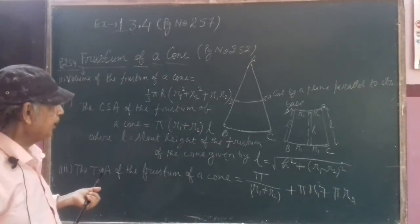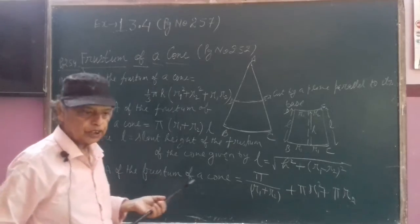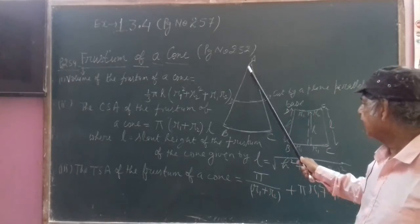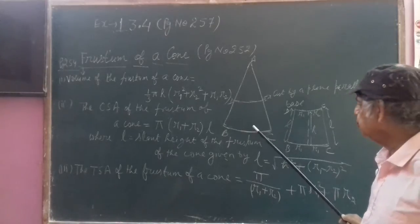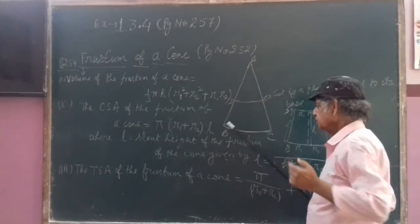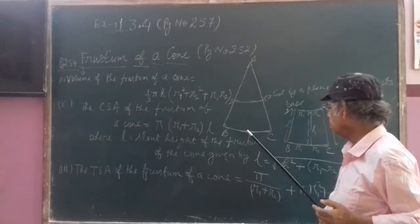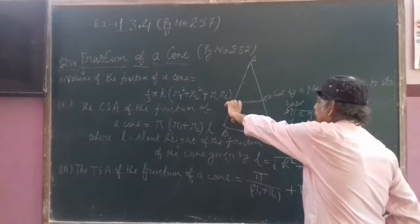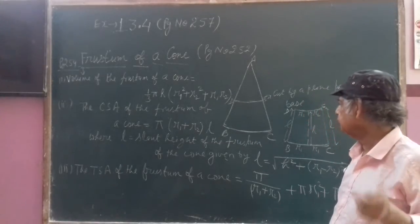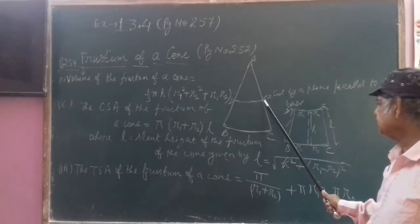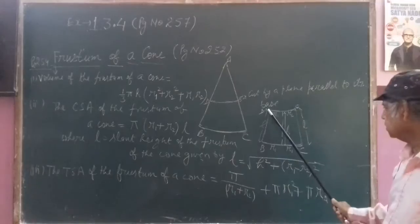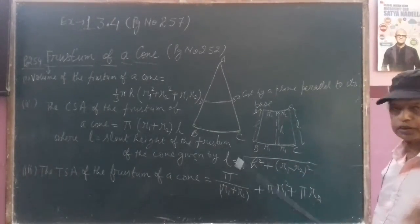I am giving you the concept of frustum of a cone. Here you see a cone — the cone is ABC. If you pass a plane, a cutting surface parallel to BC (the base), at some distance or height from BC, then the shape you obtain at the bottom is called frustum of a cone. That shape is BDEC — this is the shape of the frustum of a cone.